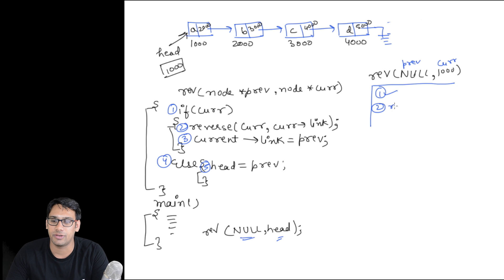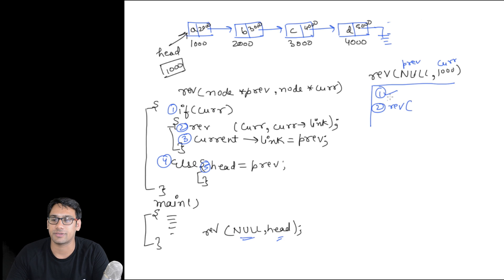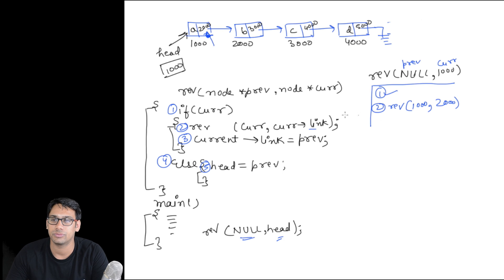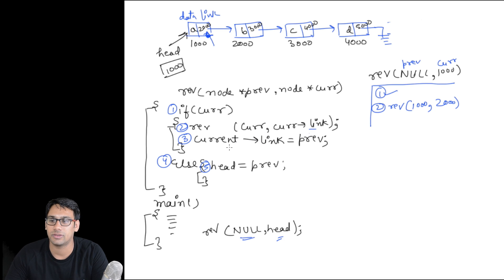In line 2 it is saying: rev(current, current.next), that means it is going to pass 1000 and current.next — whatever data is present in the link part. So we pass 1000 and 2000. This is the data part and this is the link part, so we are calling with current and current.link, meaning we are going to call with 2000.